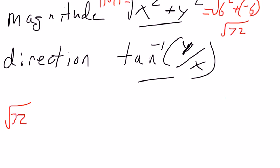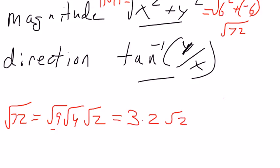The square root of 72 is the square root of 9 times the square root of 4 times the square root of 2, right, because 72 is 9 times 8. I can reduce the 9 to, the square root of 9 to 3. I can reduce the square root of 4 to 2, and then I have the square root of 2, so this becomes 6 square root of 2. This is the magnitude.